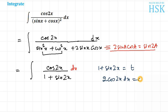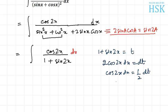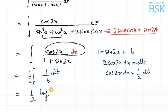What I'm going to do now is substitute this as 1/2 dt and 1 plus sine 2x as equal to t. This will be equal to 1/2 log of t plus c, because integration of 1 upon x dx is equal to log of x plus c.